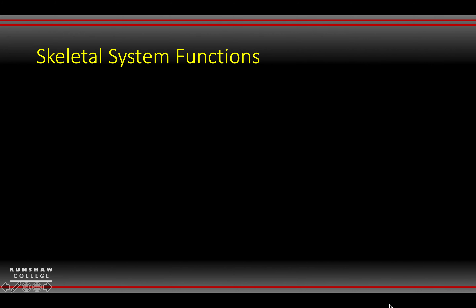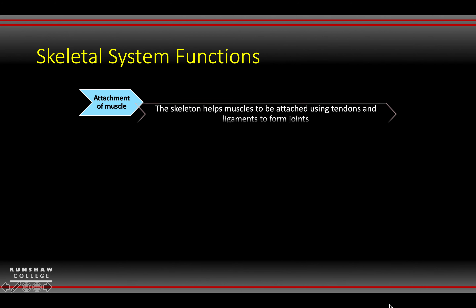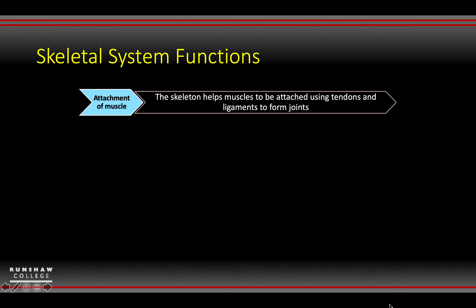Skeletal system functions. Looking at the main different functions of the system. The first one is the attachment of muscle. The reason we need the skeleton is to attach muscle, to allow us to have tendons, joints, and ligaments — things like that — to be able to move the body about.